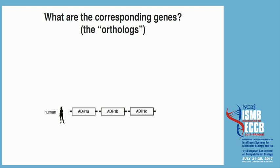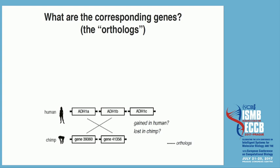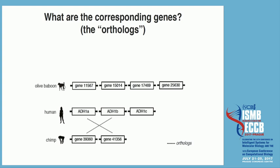Because we want to get information from other species, we look in the chimp, and there we see there are actually two genes. We find an ortholog for ADH1A and one for ADH1B, but there's no ortholog for ADH1C. So what happened? Maybe it was gained in human or lost in chimp. In the baboon there are four copies: one copy for ADH1B, but three orthologs for ADH1A, and still no sign of ADH1C. So we don't learn much more from the olive baboon about ADH1C.